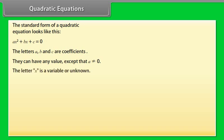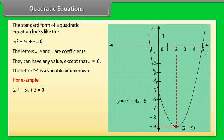The letter X is a variable or unknown. Let's take an example: 2X² + 5X + 3 = 0. In the above equation, A is equal to 2.